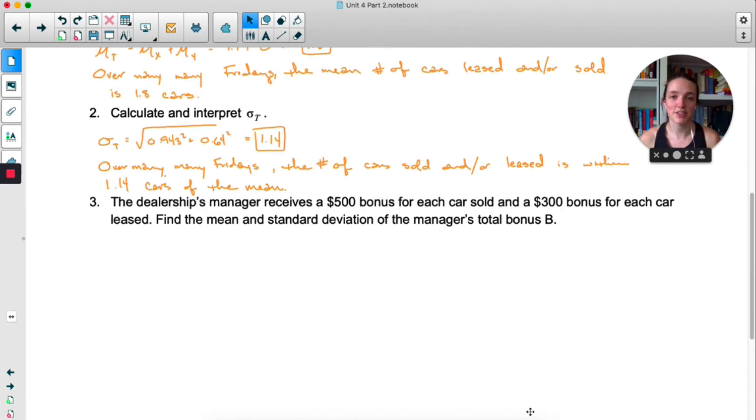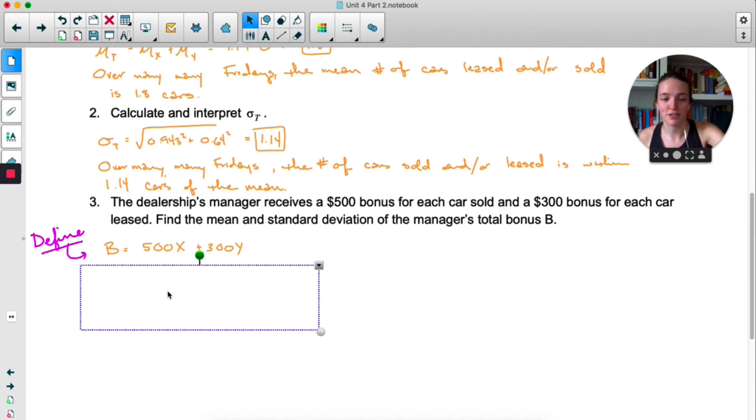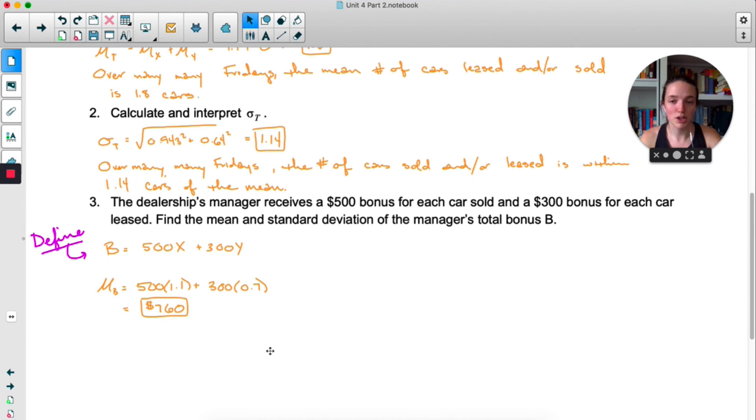For the last one, we are giving bonuses but that bonus is different depending on if the car was sold or if it was leased. For any problem like this, I would start by defining your new variable, in this case B. Let's start with the means because that's always easier. The new mean for X would be 500 times mean of X, and the new mean for Y would be 300 times the old mean for Y. And then when we add two variables together, we just add the means together. So this is just 500 times 1.1 plus 300 times 0.7. So here we are doing both things that we did on the previous pages. We are multiplying by a number and we are adding two variables together, so a little bit of everything.